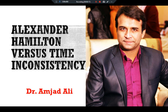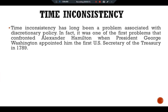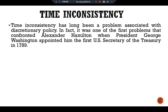Now in this video we are going to discuss a case study: Alexander Hamilton versus time inconsistency. Time inconsistency has long been a problem associated with discretionary policy. In fact, it was one of the first problems that confronted Alexander Hamilton when President George Washington appointed him the first U.S. Secretary of the Treasury in 1789.